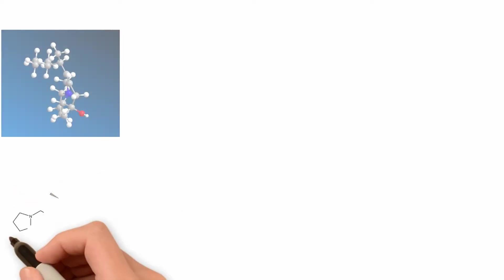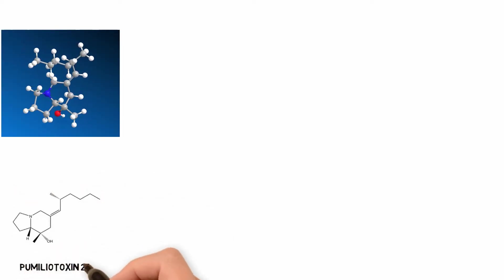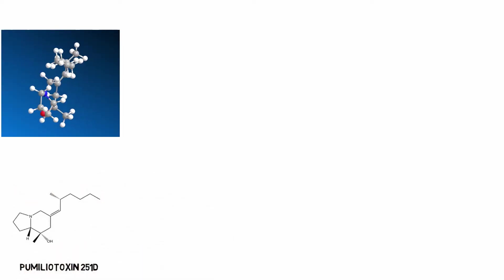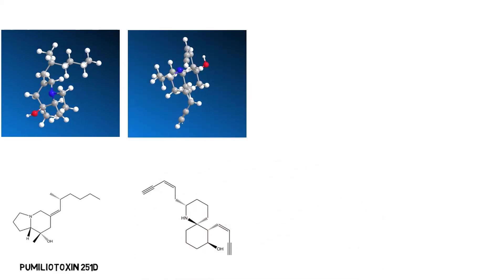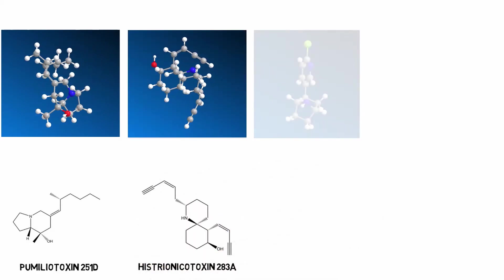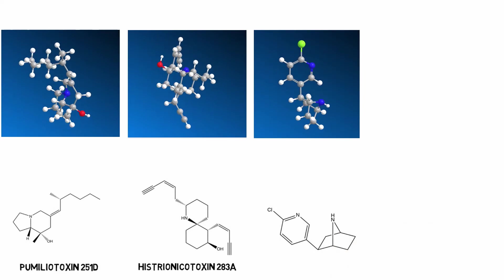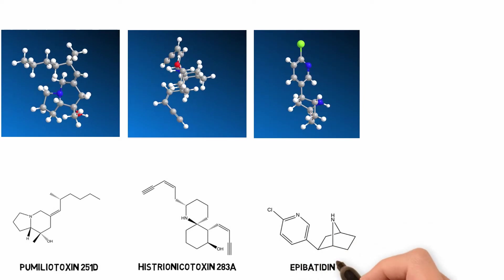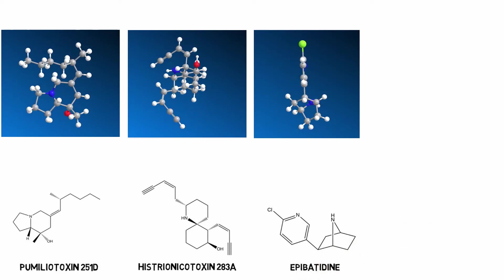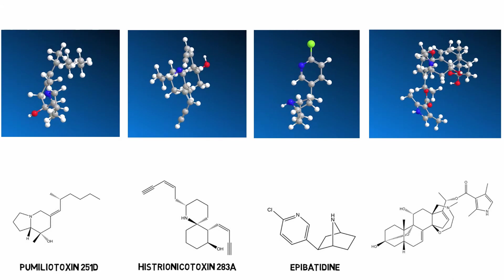Some of these include pumiliotoxin 251D, a heart stimulant; histrionicotoxin 283A, which slows neural function; and epibatidine, which is a painkiller 200 times more potent than morphine; and batrachotoxin.